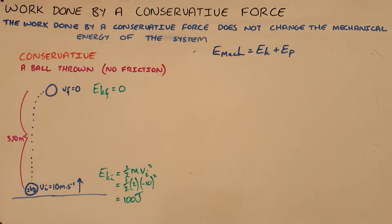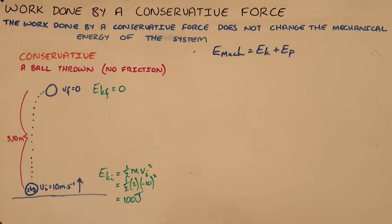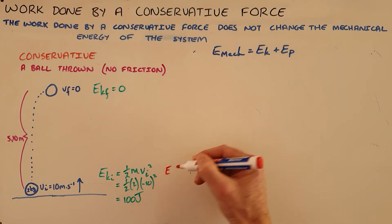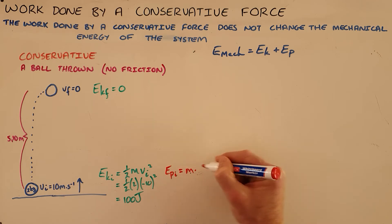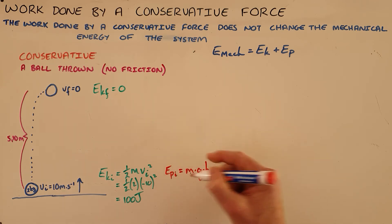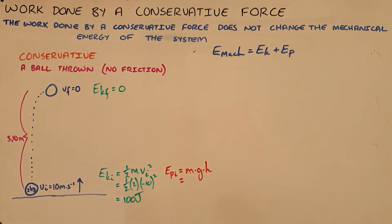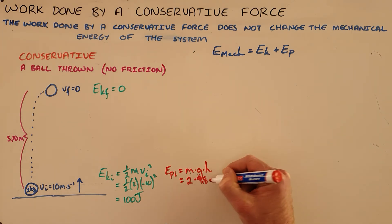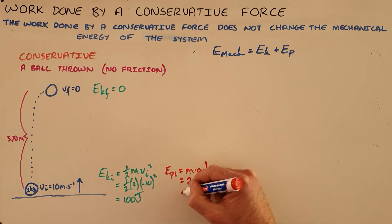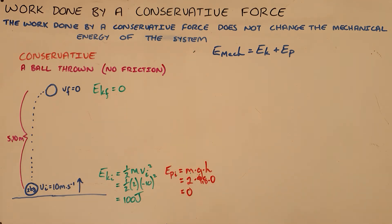Since we know that gravity is a conservative force, this energy has not been lost but only converted into another form. We can show this with potential energy. At the start of the object's motion, its initial potential energy is mass multiplied by gravitational acceleration multiplied by its height above the ground — a mass of 2 kilograms, gravity of 9.8, and since it started on the ground, its initial potential energy was zero.